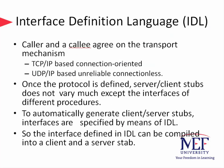Next, we make sure that the caller and the callee agree on the transport mechanism. One can choose, for instance, TCP/IP-based connection-oriented, or datagram-based connectionless mechanisms. Once the protocol is defined, server and client stubs do not vary or change, except for the interfaces of different procedures. An interface consists of a collection of procedures that can be called by a client and implemented in the server. Writing client and server stubs for different interfaces can be tedious, so there is a need to automatically generate them. Interfaces are specified by means of interface definition languages — IDL — and the interface defined in IDL can be compiled into a client and server stub automatically using IDL compilers.